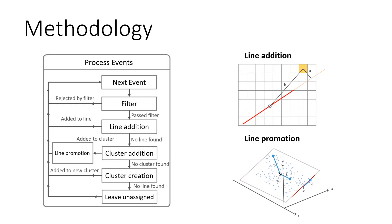We show a flowchart of our algorithm on this slide. Our algorithm works on an event-by-event basis. When a new event is triggered by the camera, we first check if it can be added to a line. If not, we check if it can be added to a cluster — a set of events that are not yet lines but could become lines in the future. If this is not the case, we check if a new cluster can be created, or the event is left unassigned.